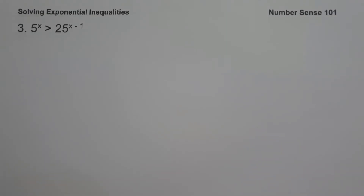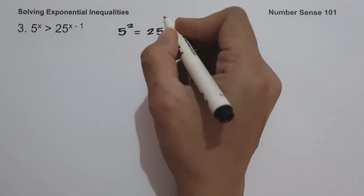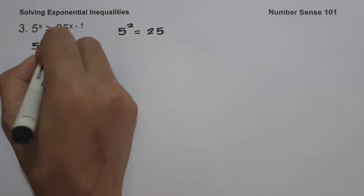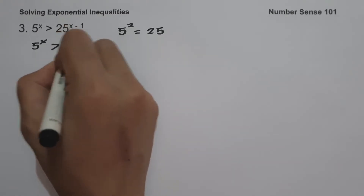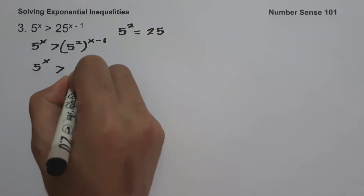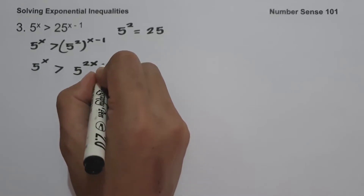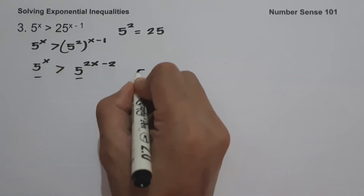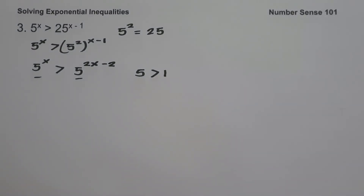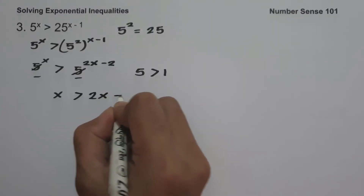On example number 3: 5 raised to x is greater than 25 raised to x minus 1. We change 25 to 5 squared, since 5 multiplied by itself is 25. So we have 5 raised to x greater than 5 squared raised to x minus 1. Multiplying the exponent gives 2 times x equals 2x, and 2 times negative 1 equals negative 2. Since the base 5 is greater than 1, the direction of the inequality is retained. Canceling the base gives x greater than 2x minus 2.